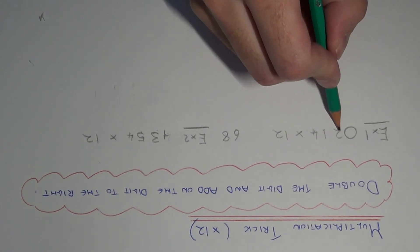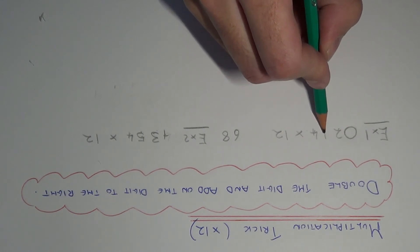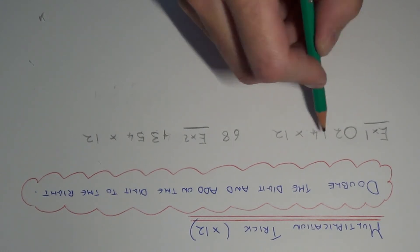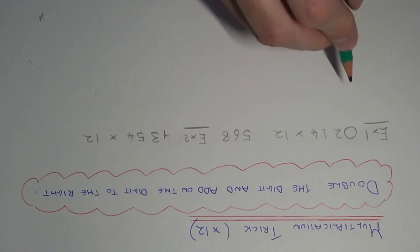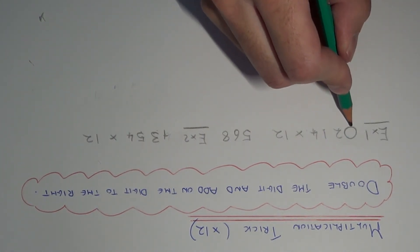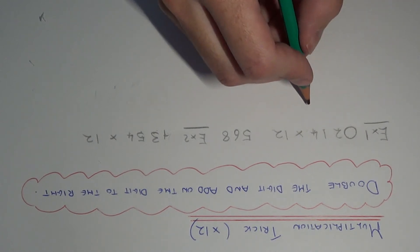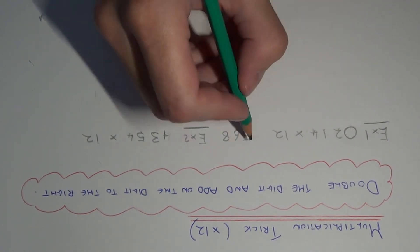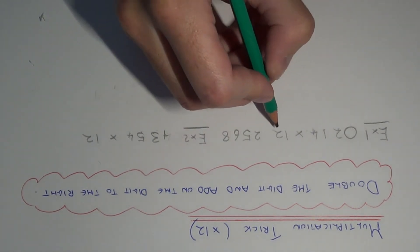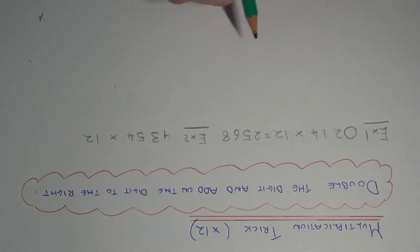Moving to the next digit: double the 2 is 4, add on the digit to the right which is 1, so 4 add 1 is 5 — we put the 5 here. Finally, double the 0 is 0, add on the digit to the right which is 2, so 0 add 2 is 2. We get an answer of 2,568.